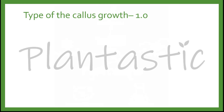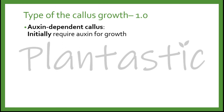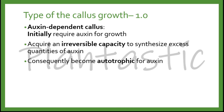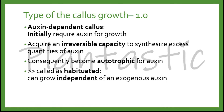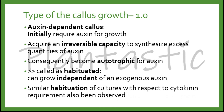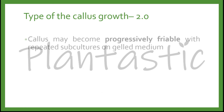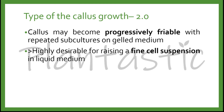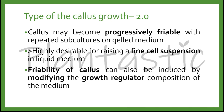There are a few types of callous growth. First, the auxin-dependent callous, in which the callous initially requires auxin for growth. The callous can acquire an irreversible capacity to synthesize excess quantities of auxin. Consequently, it becomes autotrophic for auxin — called habituated — in which it can grow independent of exogenous auxin. Similar habituation with respect to cytokinin requirement has also been observed. The callous culture may become progressively friable with repeated subcultures on the same medium. Friable callous is highly desirable for raising a fine cell suspension in liquid medium. The friability of callous can also be induced by modifying the growth regulator composition of the medium.